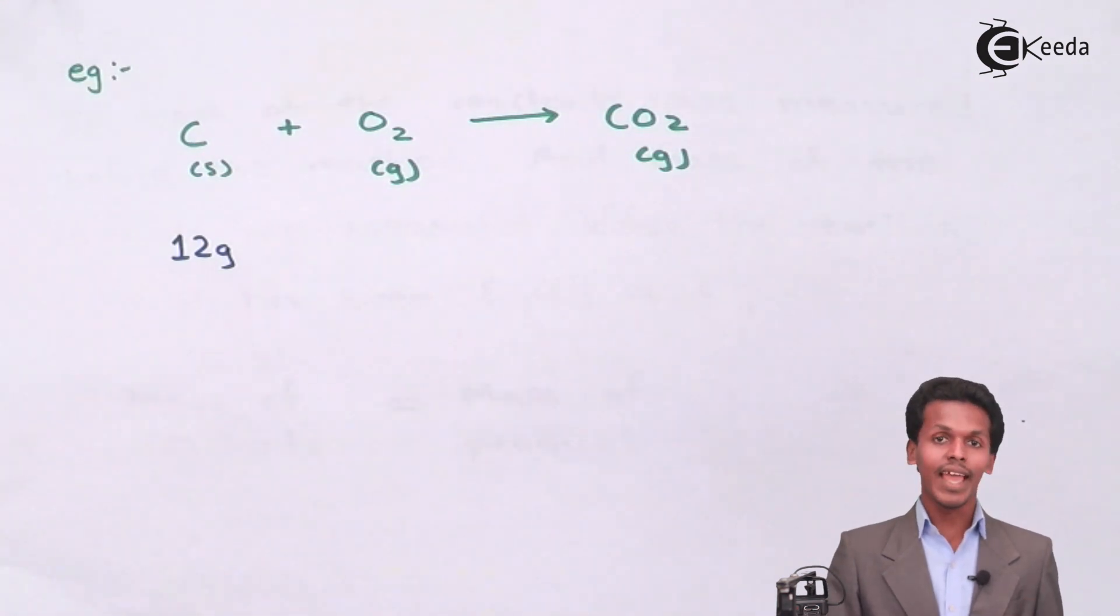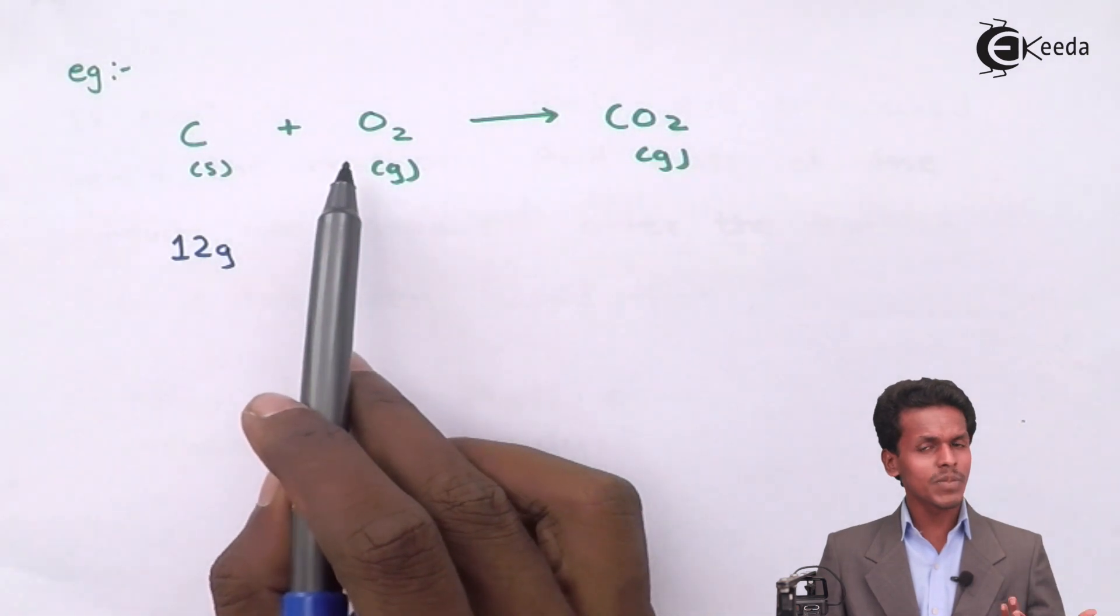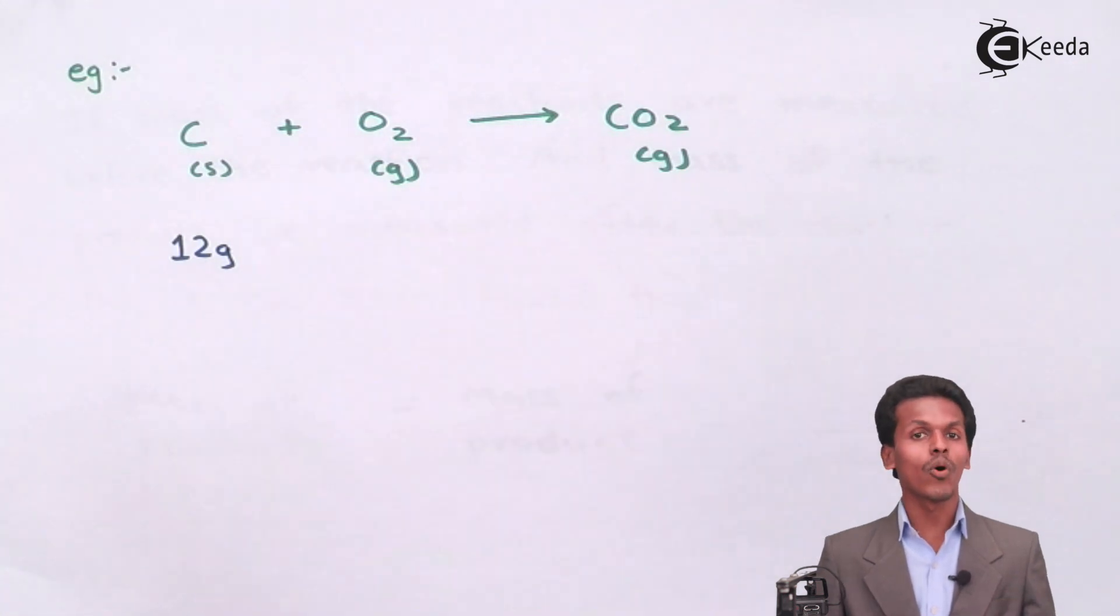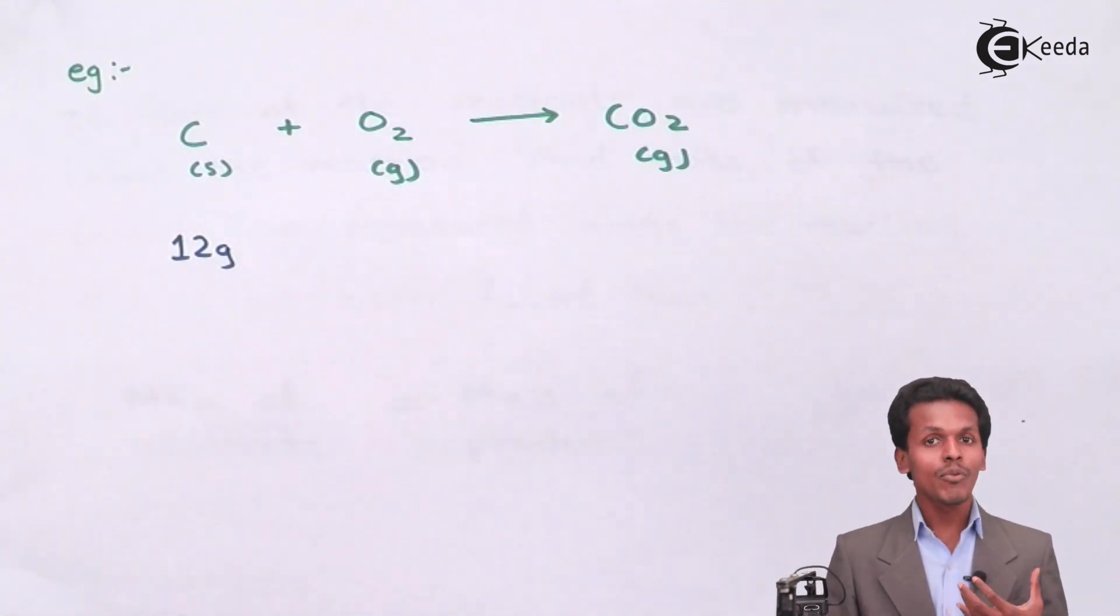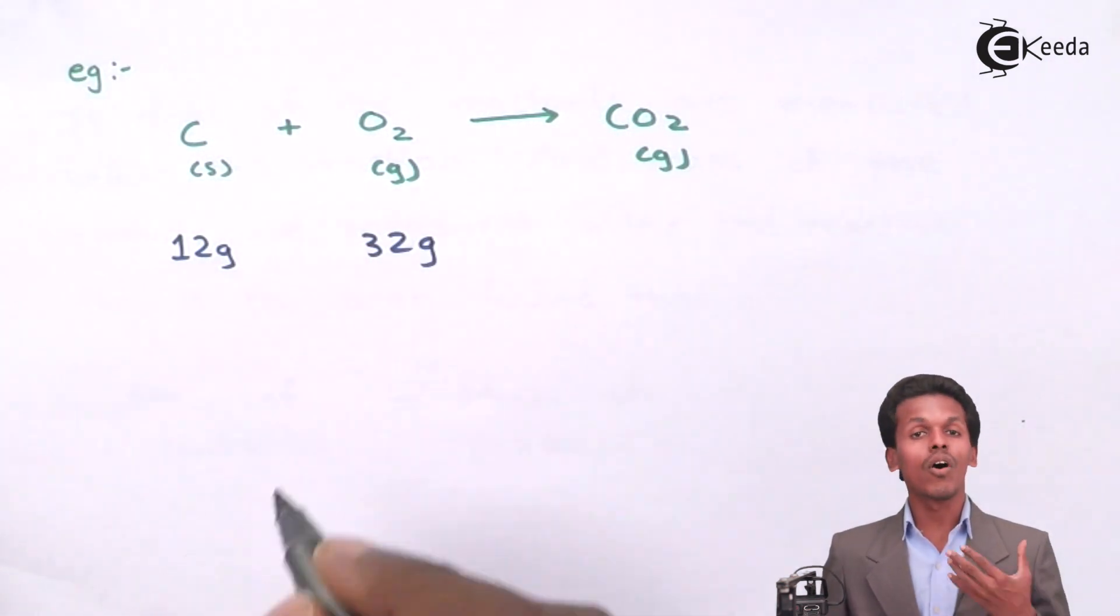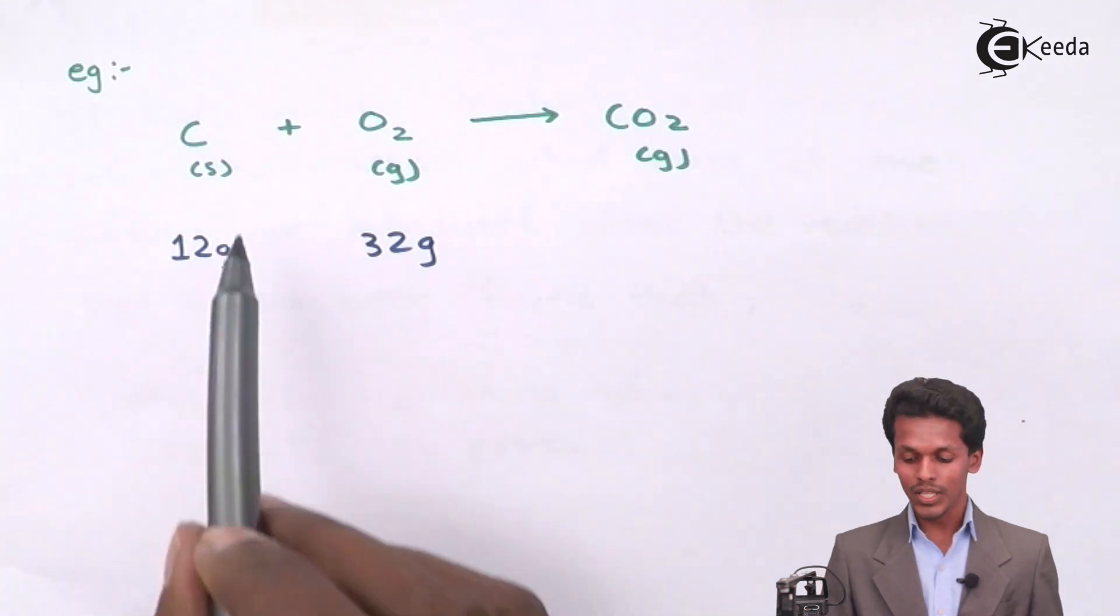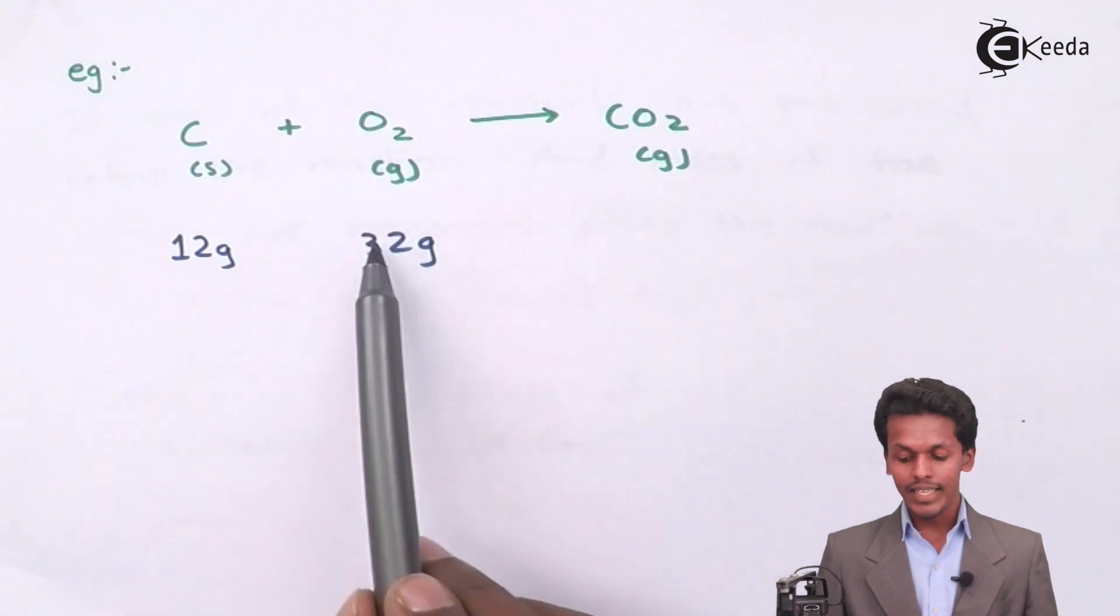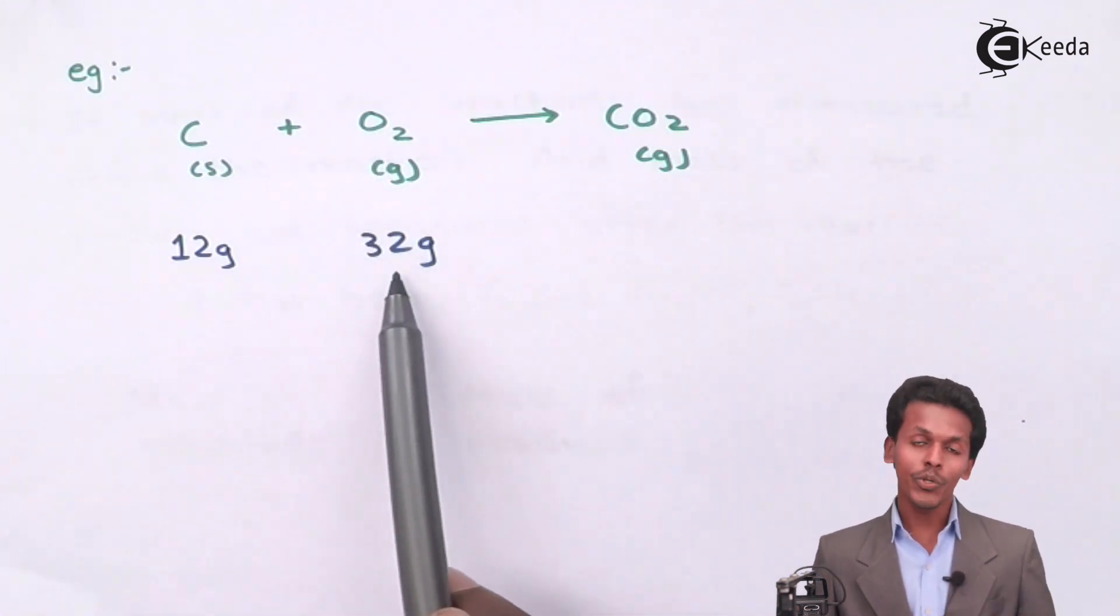One oxygen atom has a molar mass of 16. Since there are two atoms in an oxygen molecule, one mole of O2 weighs 32 grams. So the mass of carbon is 12 grams and the mass of oxygen is 32 grams.